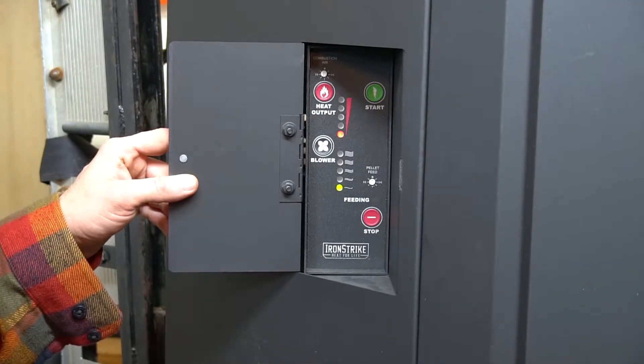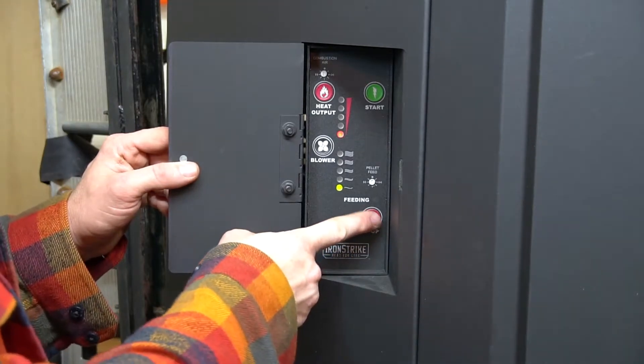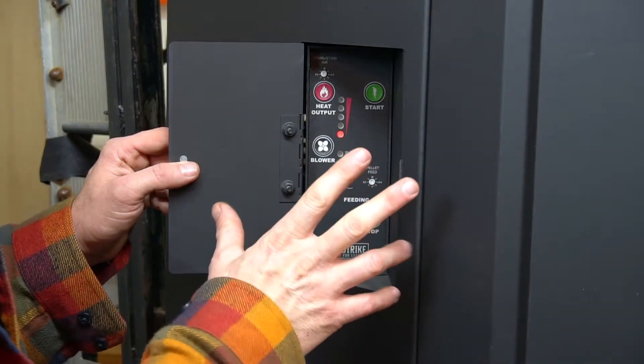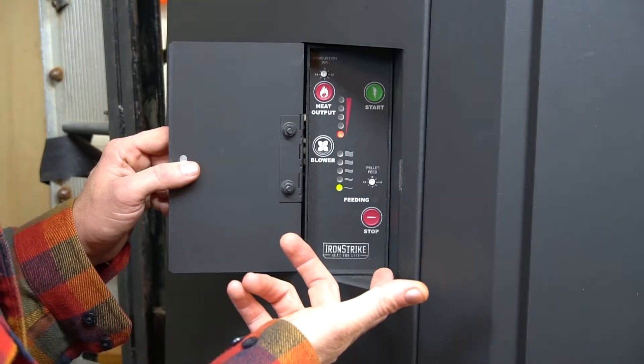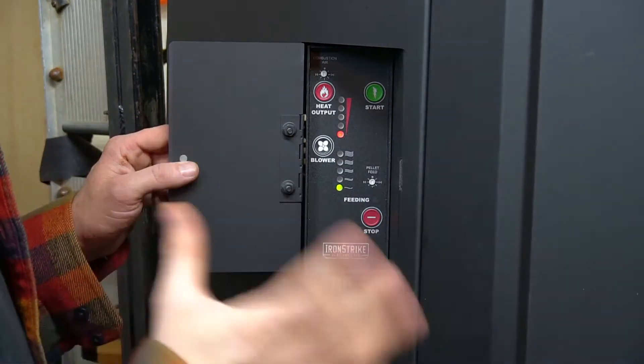It's going to ramp itself back down. If you want to turn the stove off, you simply hit the feed button. It turns off the feed and the stove will run out of pellets and it will shut itself off.